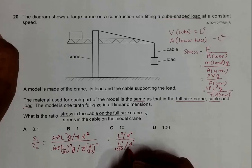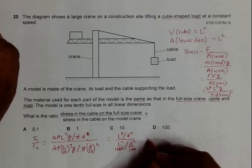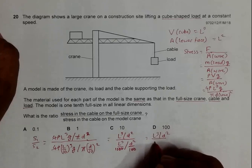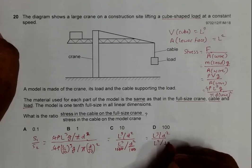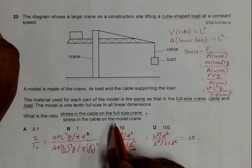From here, this and this cancel. It equals L³/d² and L³/(10d²). d² cancels. This equals 10. The stress in the cable on the full-size crane will be 10 times the stress in the cable on the model crane.